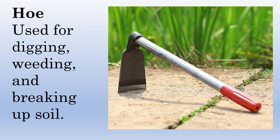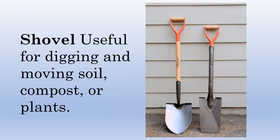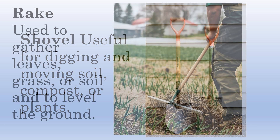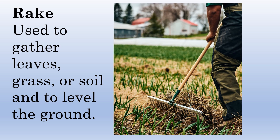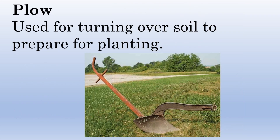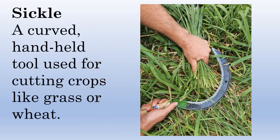Hoe — used for digging, weeding, and breaking up soil. Shovel — useful for digging and moving soil, compost, or plants. Rake — used to gather leaves, grass, or soil and to level the ground. Plow — used for turning over soil to prepare for planting. Sickle — a curved, handheld tool used for cutting crops like grass or wheat.